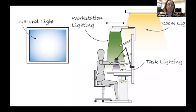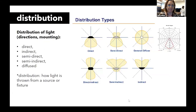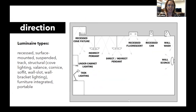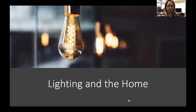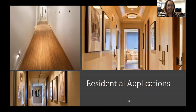We need a combination of all of the above — task lighting, workstation lighting, room lighting, and natural lighting. Moving on to residential applications: layered lighting is important for all rooms in general.